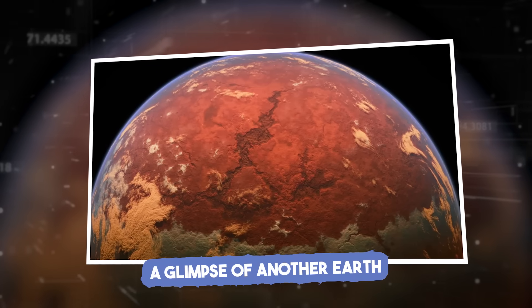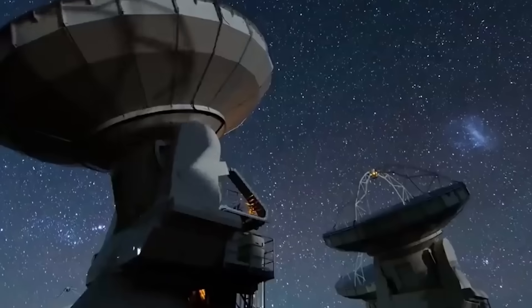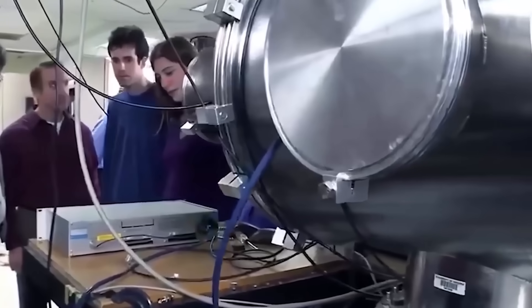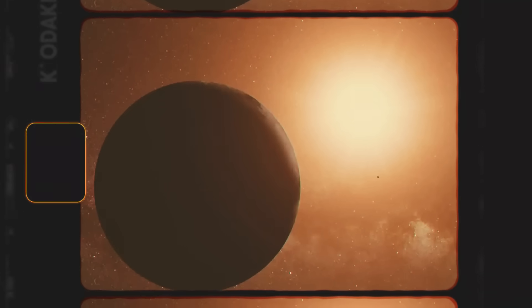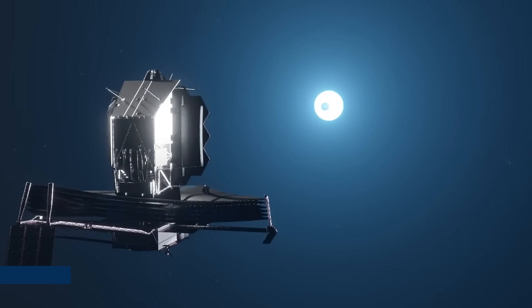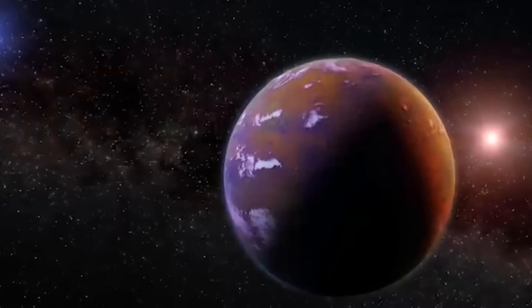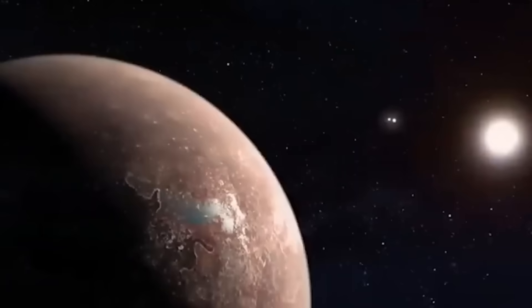For the first time in history, we've seen it. Not imagined it, not simulated it, but truly seen it. A real image of an alien planet just over four light years from Earth. The James Webb Space Telescope has just captured the clearest view we've ever had of Proxima b. This isn't just another space photo, this is something much bigger.